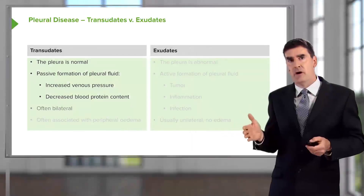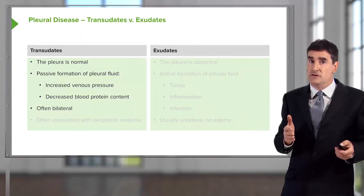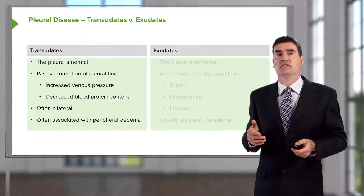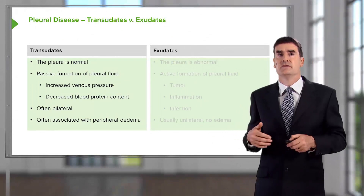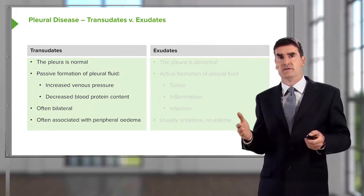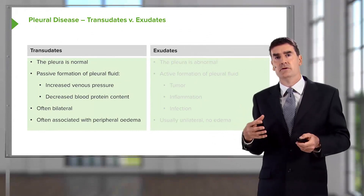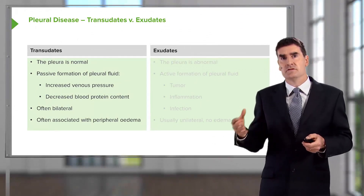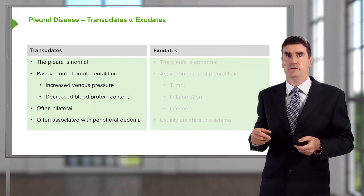Transudates may be bilateral but can be unilateral, and they can be associated with peripheral edema because the same mechanisms that cause pleural fluid in these patients will also cause peripheral edema.